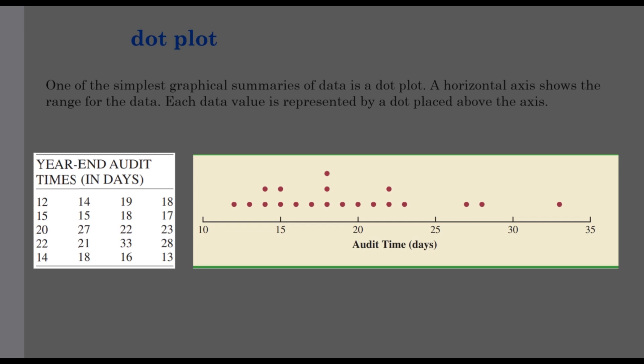One of the simplest graphical summaries of data is a dot plot. A horizontal axis shows the range of the data. We make a range and an axis, and we make a dot plot. The number line shows numbers in a pattern — each data value is represented by a dot placed above the axis.